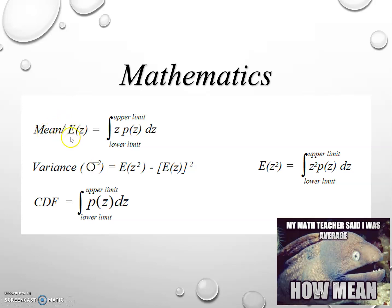First, we have the mean, also called the expected value of z, calculated as the integral of z·p(z)·dz from lower to upper limit. For variance, the symbol is sigma squared, where sigma is the standard deviation. Variance equals the expected value of z squared minus the expected value of z, whole squared. The expected value of z squared is the integral of z²·p(z)·dz. The CDF is simply the integral of p(z)·dz from lower to upper limit.